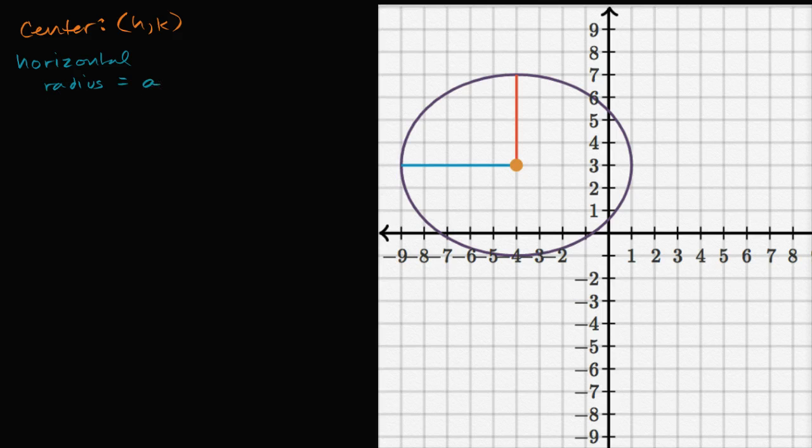And let's say your vertical radius is equal to b, then the equation of this ellipse is going to be x minus h, x minus h squared over your horizontal radius squared, so your radius in the x-direction squared.